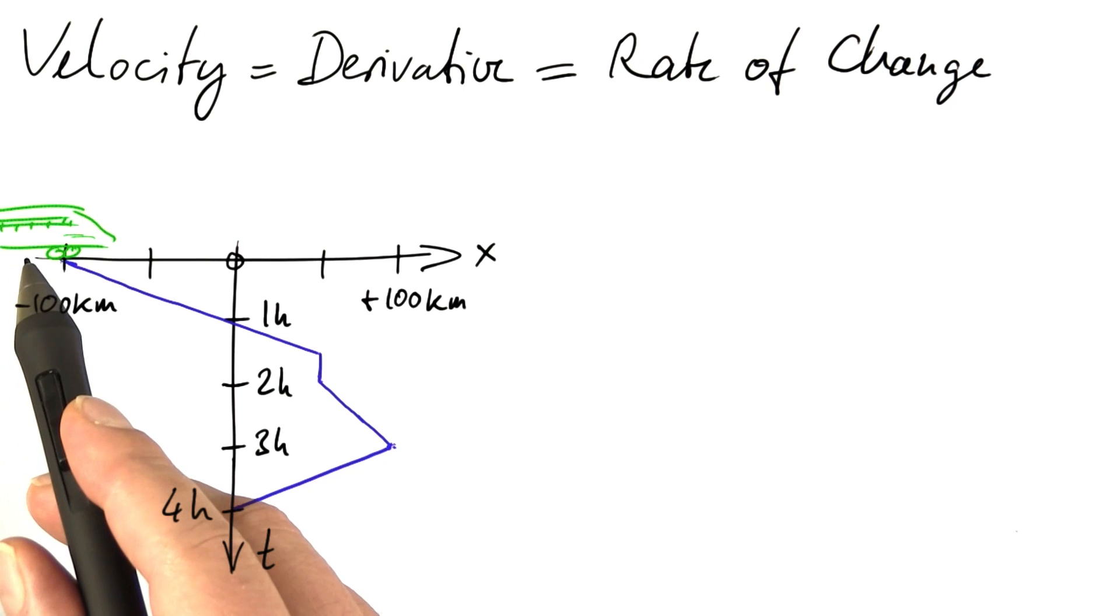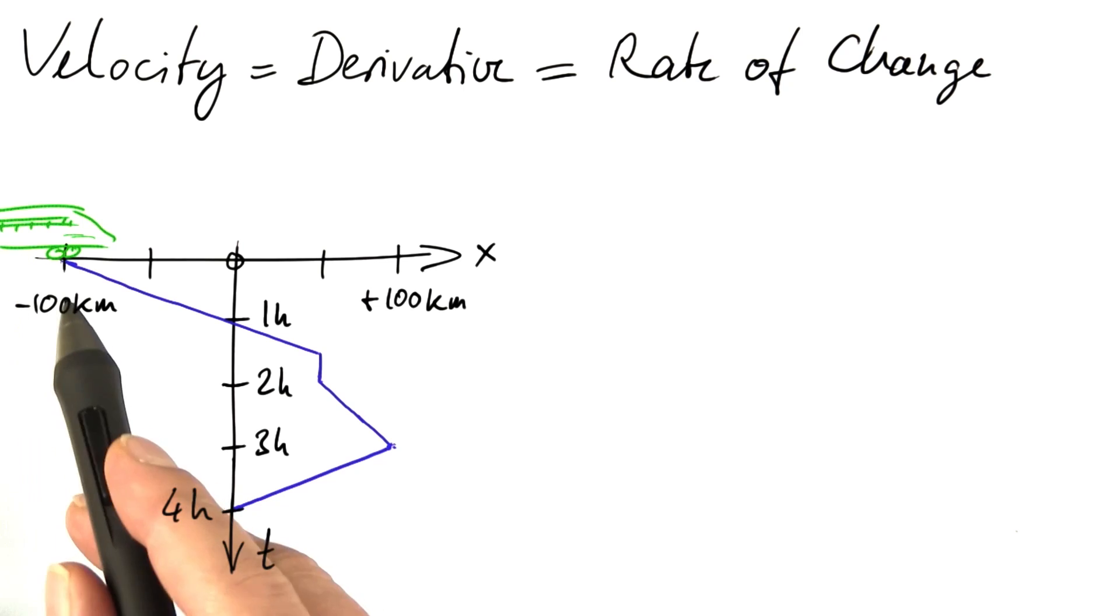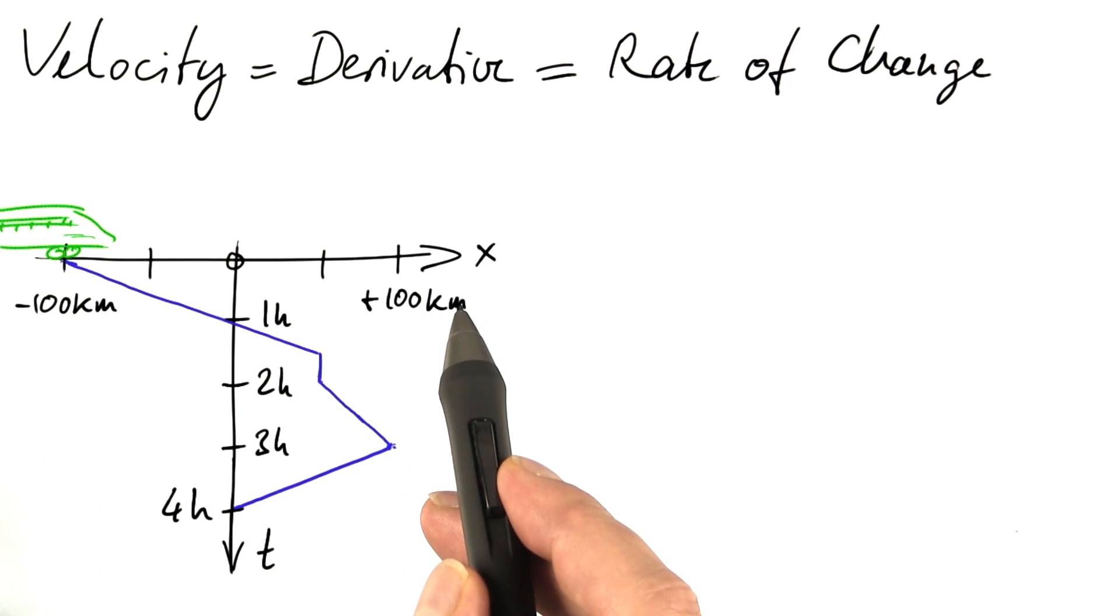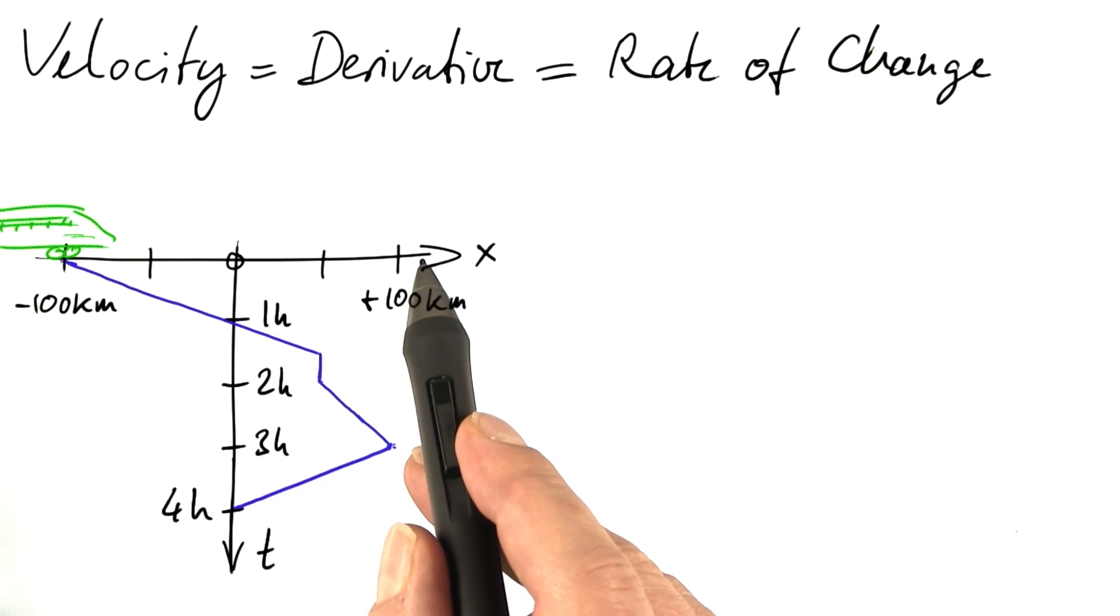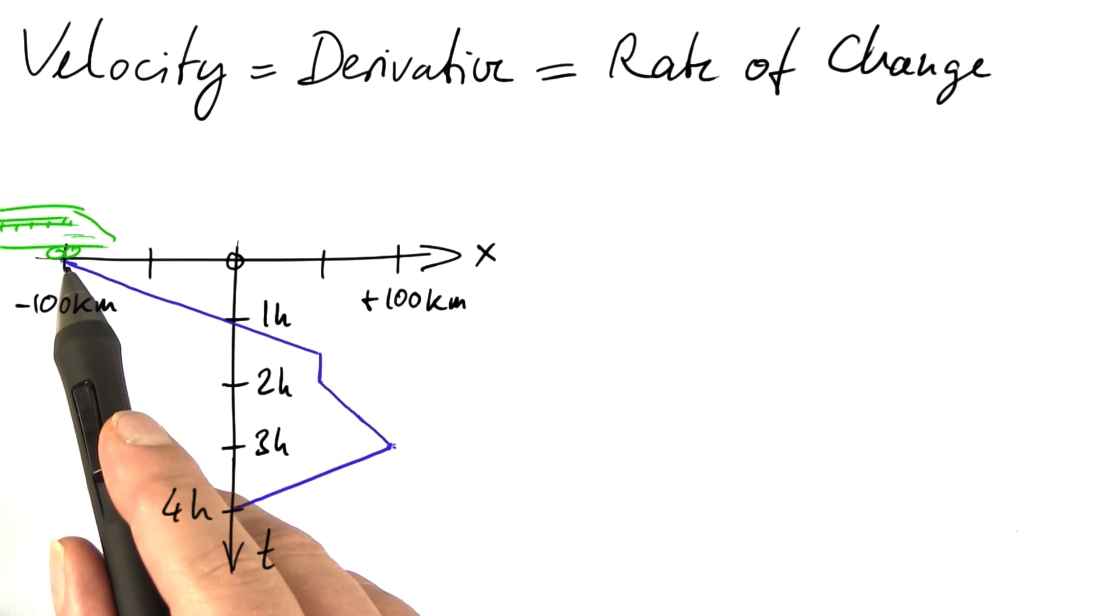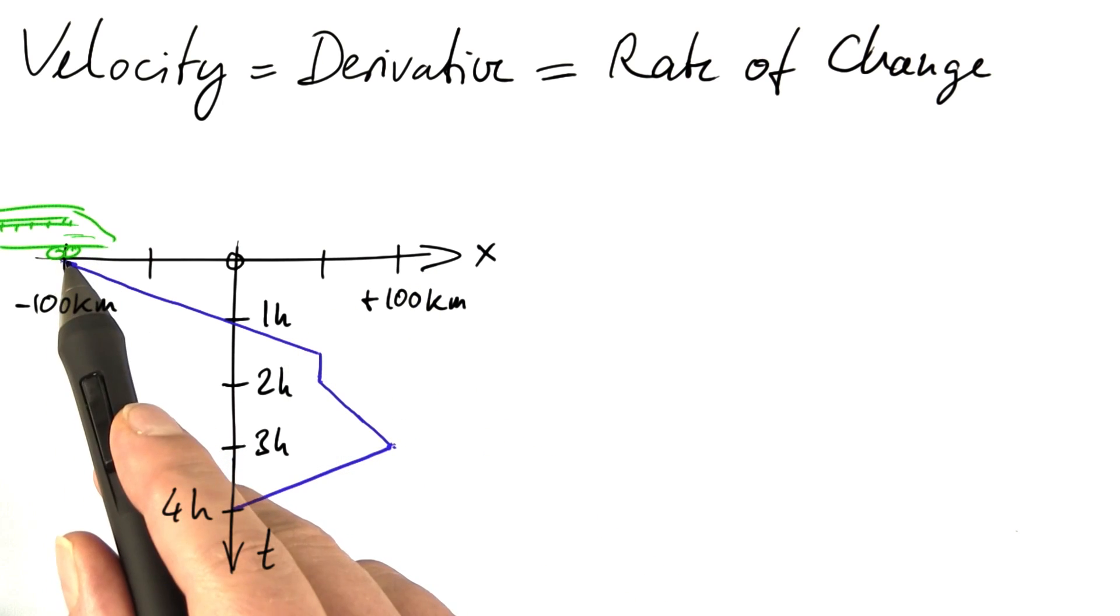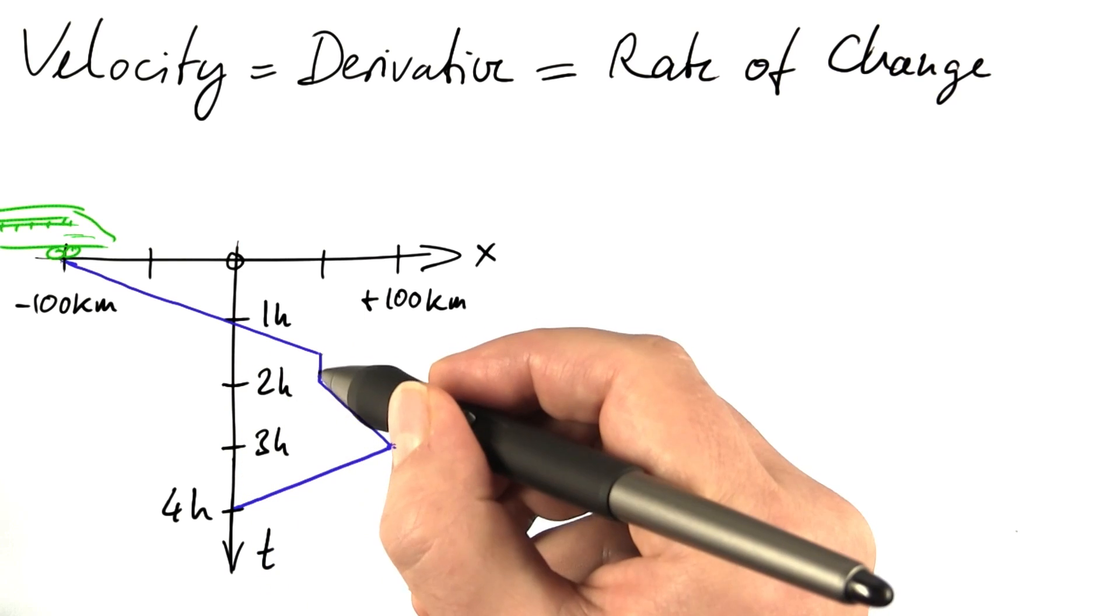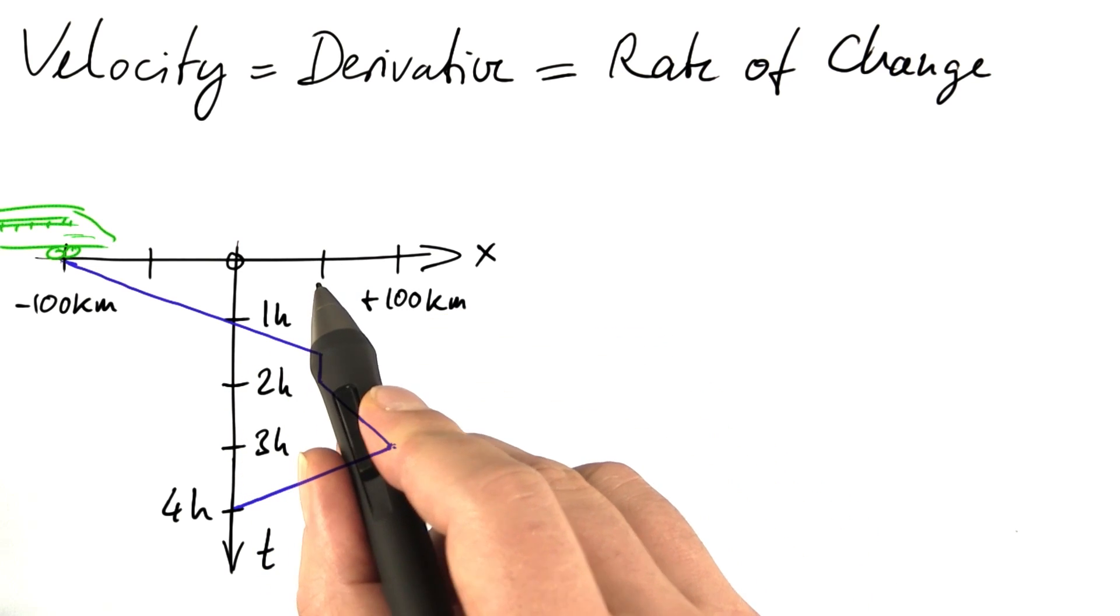Imagine this situation, that we have a high-speed train on the track that is labeled from minus 100 kilometers to plus 100 kilometers, so the track is 200 kilometers long, and this is our timetable. The train starts here at minus 100 kilometers and drives at a pretty high speed till one and half an hour after the start, then it stops at this position, 50 kilometers.